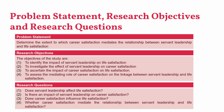Here is an example of how a problem statement can be shaped into research objectives. Assume the problem statement is: 'Determine the extent to which career satisfaction mediates the relationship between servant leadership and life satisfaction.' The first objective is to identify the impact of servant leadership on life satisfaction. The second is to investigate the effect of servant leadership on career satisfaction, the mediating variable. The third is to ascertain the impact of career satisfaction on life satisfaction. And the fourth is to assess the mediating role of career satisfaction on the linkage between servant leadership and life satisfaction.